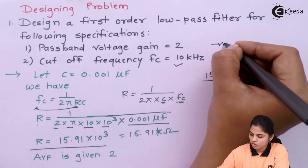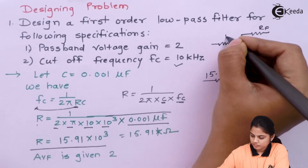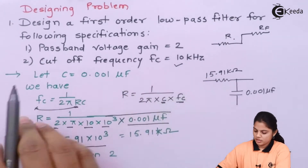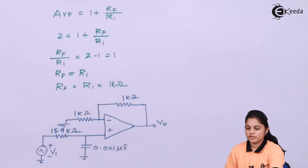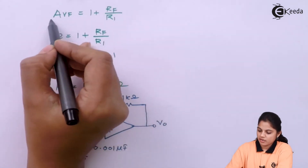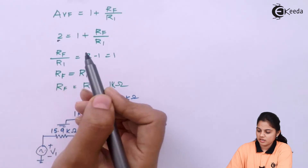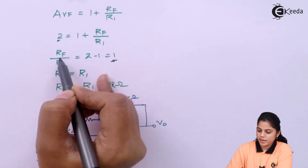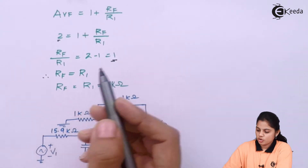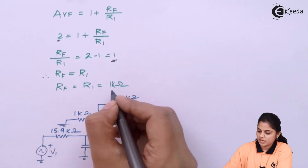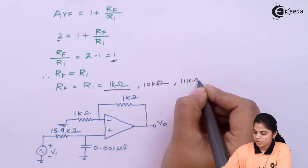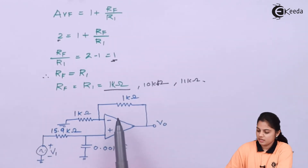Now we find R1 and RF. The passband voltage gain AVF is given as 2. For a non-inverting configuration, the closed-loop gain is AVF = 1 + RF/R1. Substituting 2: RF/R1 = 1, meaning RF must equal R1 — they should have the same value. You can assume any value; for example, RF = R1 = 1 kΩ, or 10 kΩ, or 11 kΩ.